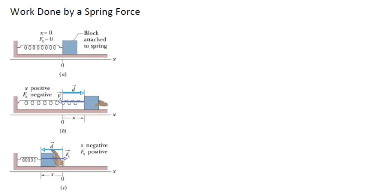Let's figure out what is the work done by the force of a spring. We have a spring at its relaxed length — not stretched or compressed — and we call that x equals zero. The spring is not exerting a force on the block yet. If we pull the block to the right, we're stretching the spring, and the spring will want to pull the block back to the left.